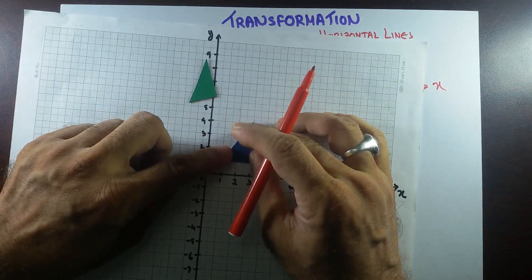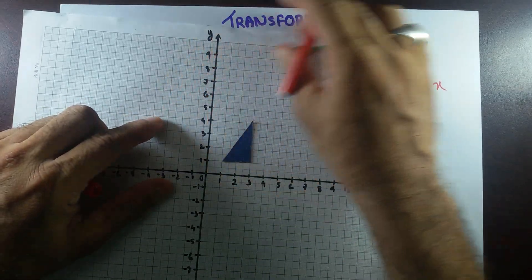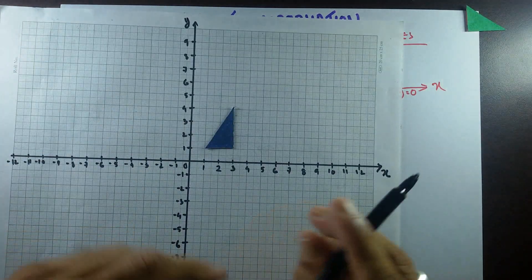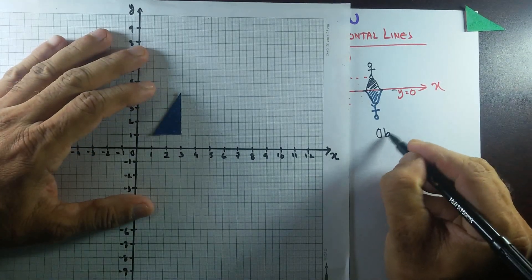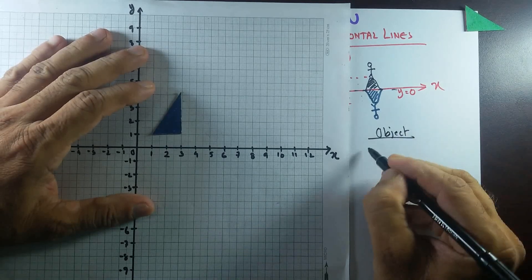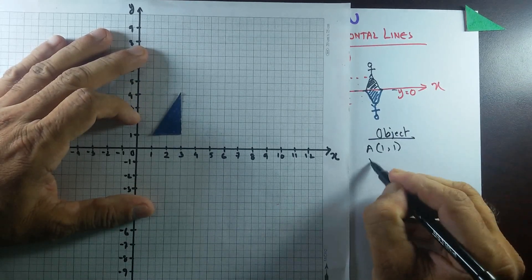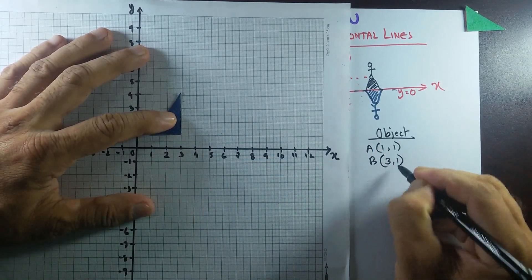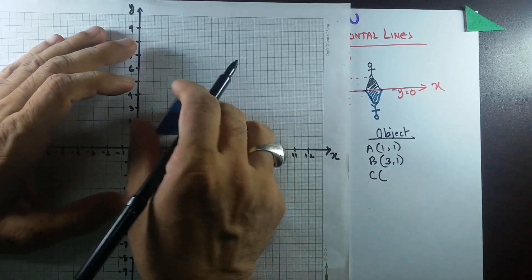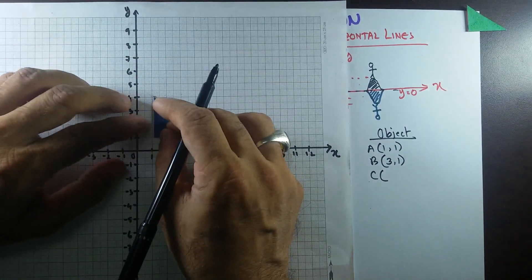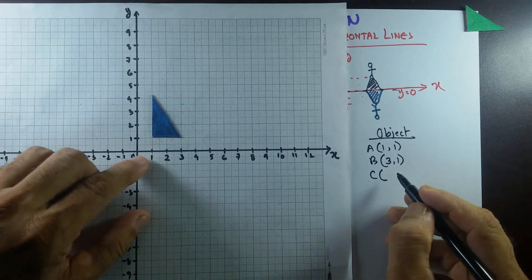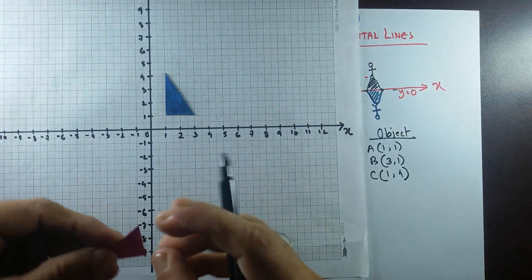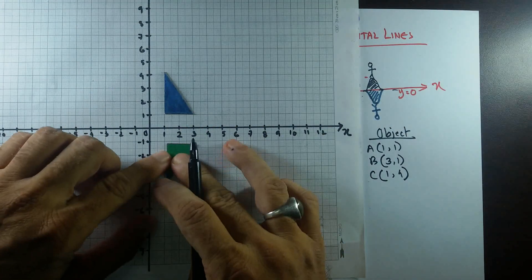If a triangle is like that, I am going to use the same coordinates as in the last video. A is the object with coordinates (1, 1). Coordinates of B are (3, 1). And C has coordinates (1, 4). Now the reflection would be something like that.